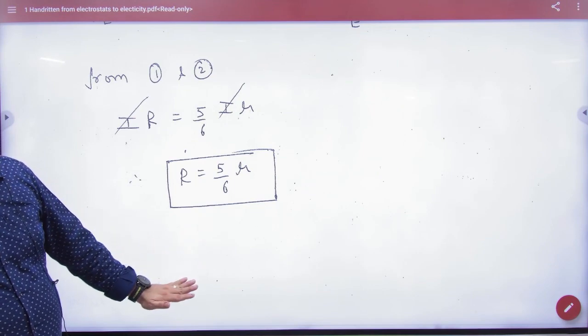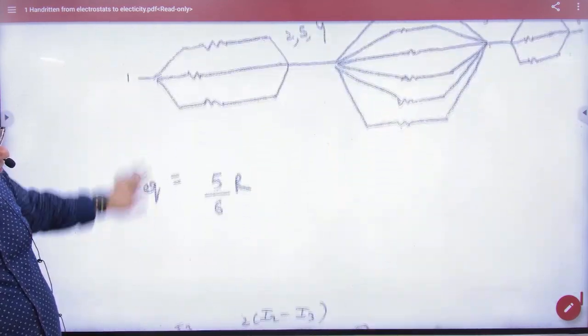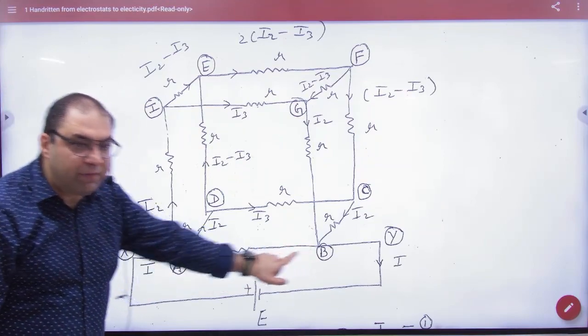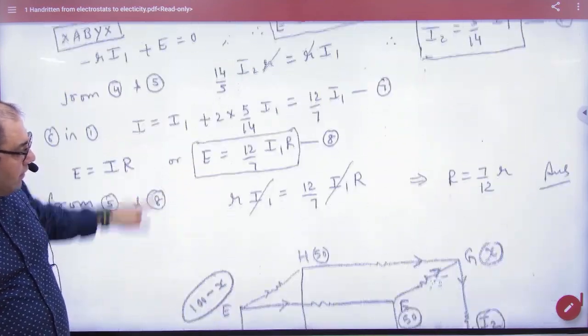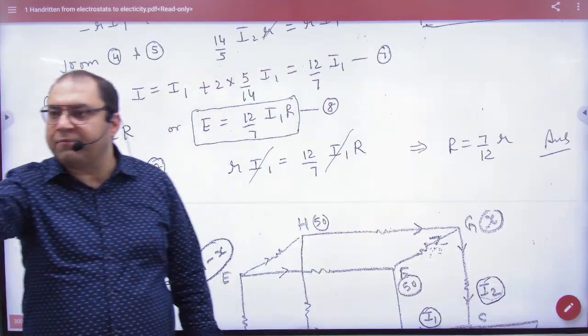And if you have to make equivalent resistance - look at your attention - if you have to make equivalent resistance at a and b here, on a and b here on the diagonal, on a and b side, then your answer will be 7 by 12 r. This is a standard problem in your books in NCERT.